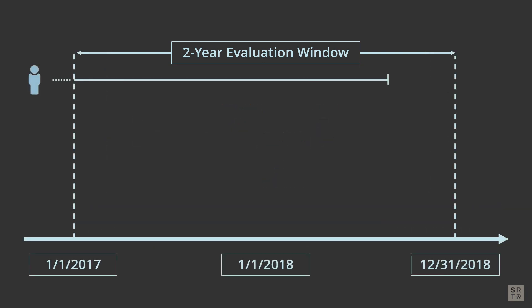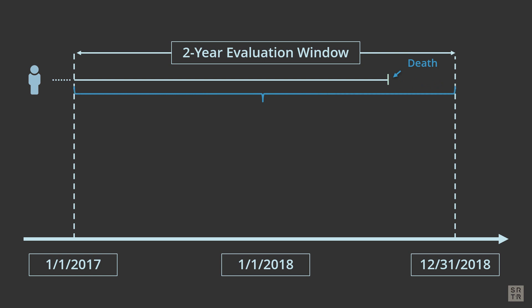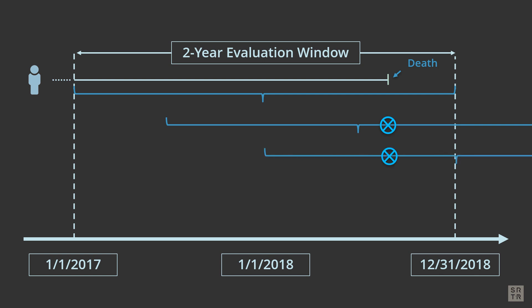Observation periods roll forward six months every six months, so a candidate can remain in the program's reports and contribute to the person years for some time, depending on when the candidate was waitlisted. Also, depending on whether removed or given an inactive status, they can remain on the list. Their death can also count in multiple reporting periods. Note how a candidate's death can remain in successive reports for at least three cycles.